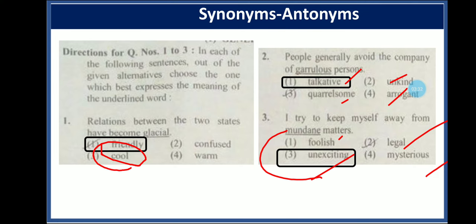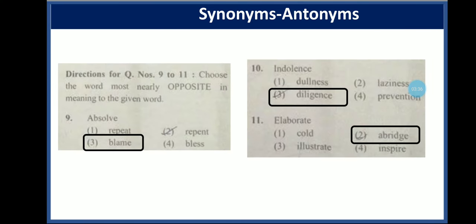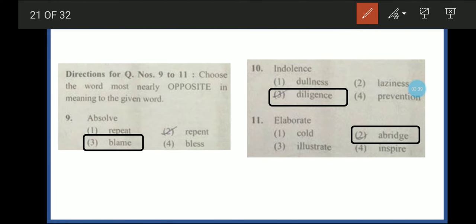Are you getting my point? If you are getting it, then please hit the like button. Next, choose the word most nearly opposite in meaning to the given word. Now we look at opposite words. Absolve means to free someone from blame or fault. The opposite is to blame someone, so the answer is blame.